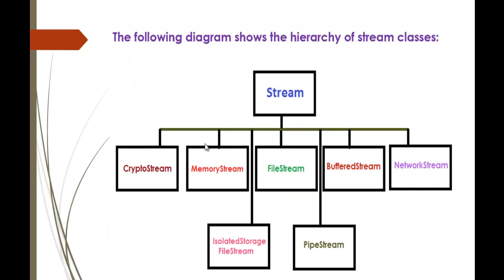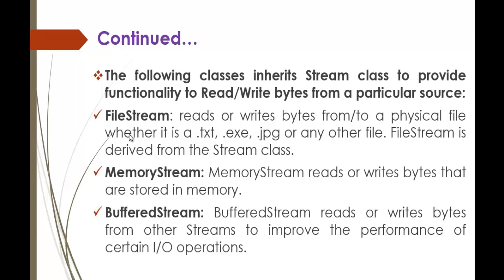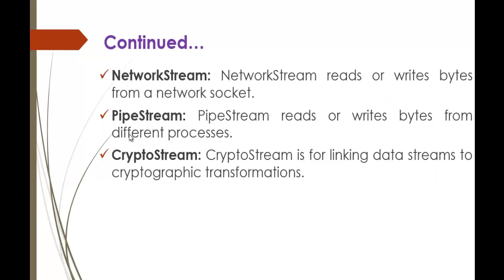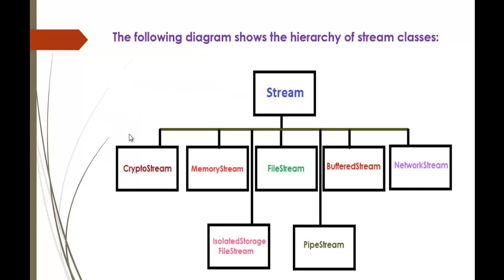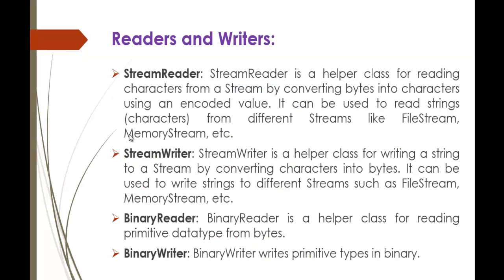This is how the stream class and the FileStream class work. We also have other classes like MemoryStream and BufferedStream if you want to read or write to memory, as well as NetworkStream, PipeStream, and CryptoStream. These classes extend the stream class to do read and write operations. The stream class is inherited by these respective classes: CryptoStream, MemoryStream, FileStream, BufferedStream, IsolatedStorage, and PipeStream.